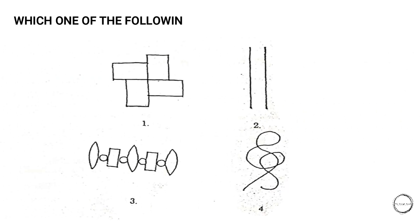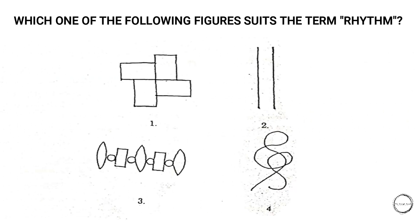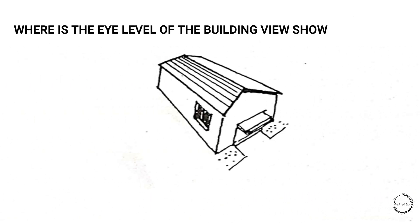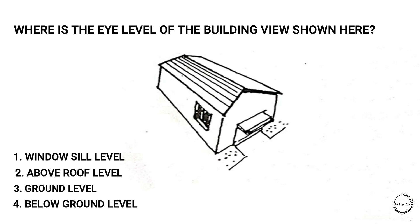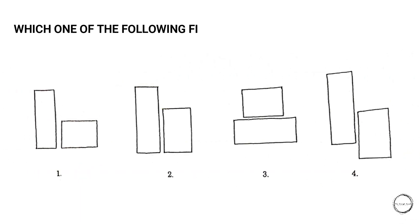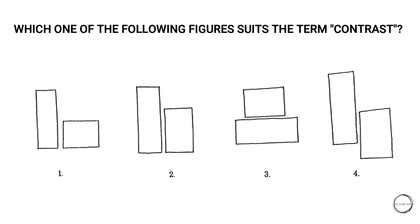Next question: which one of the following figures suits the term 'rhythm'? The answer is option three. Next: where is the eye level of the building view shown — windowsill level, above roof level, ground level, or below ground level? The answer is above ground level. Next: which figure suits the term 'contrast'? The answer is option one because all other options are either horizontal or vertical.